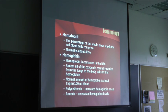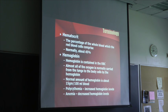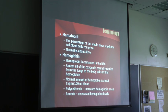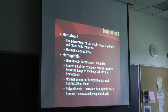Hemoglobin is inside a red blood cell. Almost all of the oxygen is normally carried from the lungs to the body cells by the hemoglobin. In lay terms, red blood cells carry oxygen to the tissues. But more specifically, inside the red blood cell there's a molecule called hemoglobin, and that's where the oxygen attaches.